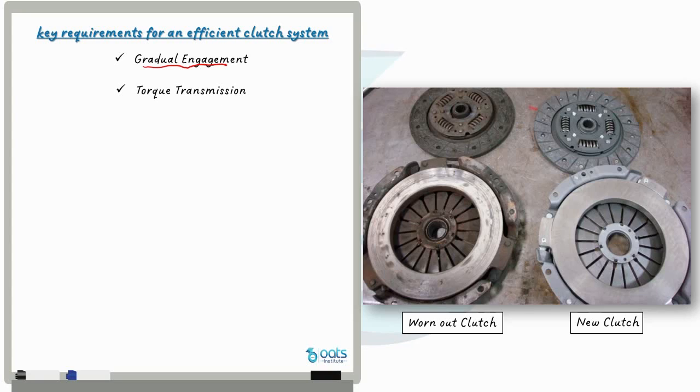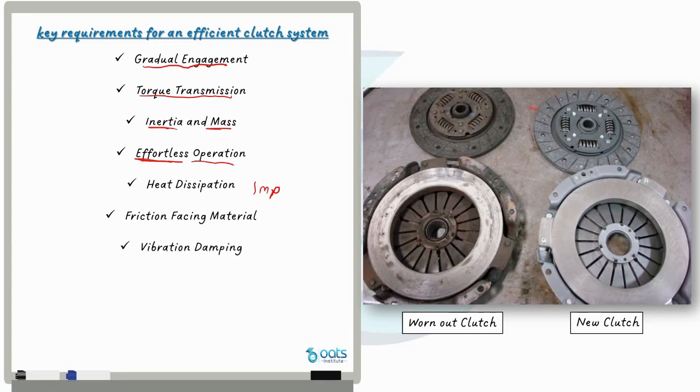A good clutch should enable smooth and gradual engagement to ensure seamless transmission between gears. The clutch must effectively transmit the engine torque to the transmission system without any power loss. Proper management of inertia and mass within the clutch system is crucial for efficient operation and response. The clutch should be designed for ease and effortless operation ensuring a comfortable driving experience for the user. Effective heat dissipation is essential to prevent overheating and maintain optimal clutch performance. The choice of high quality friction facing material is vital for reliable and durable clutch engagement. The clutch should have mechanisms in place to dampen vibrations and reduce any unwanted noise or discomfort.